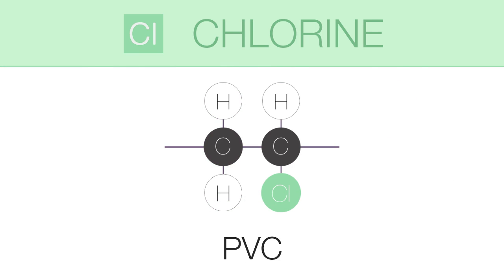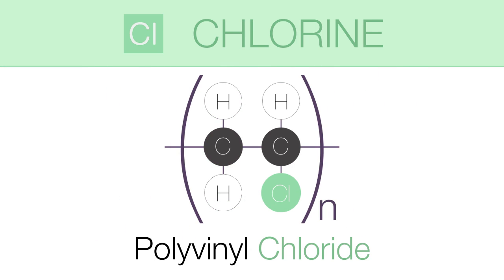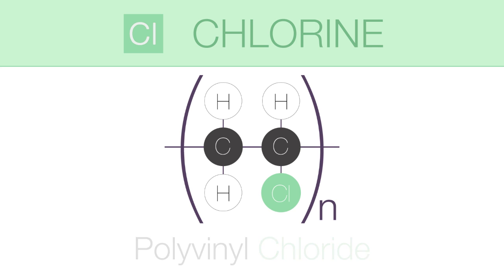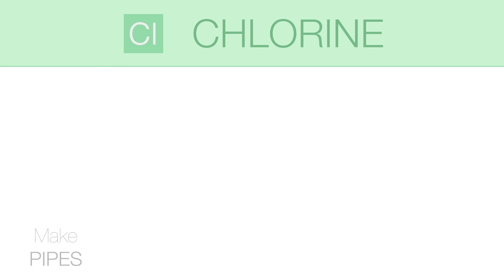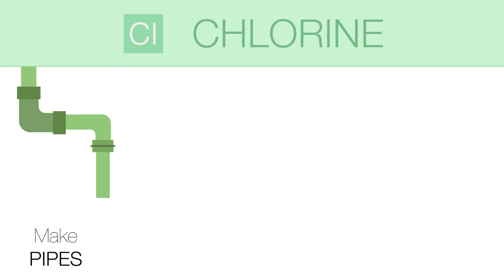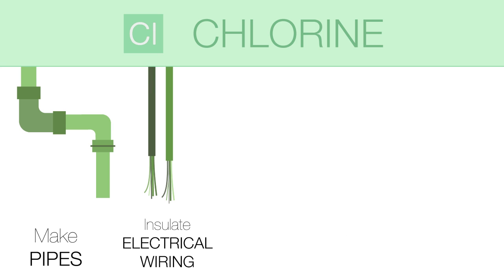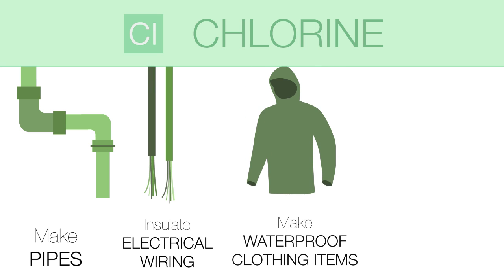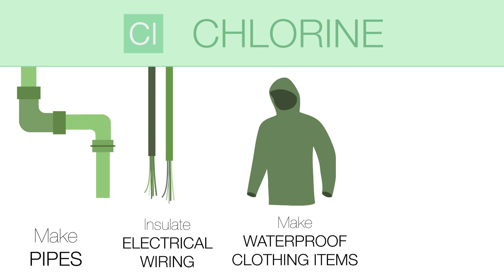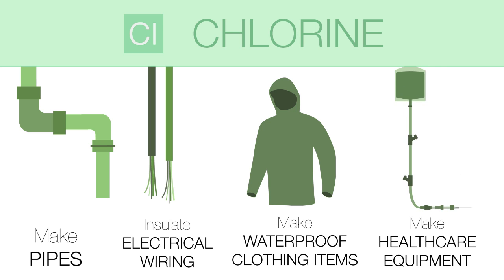PVC, or polyvinyl chloride, is a certain type of plastic. It can be used to make pipes, insulate electrical wiring, make waterproof clothing items, and to make important healthcare equipment, such as IV tubing and bags.